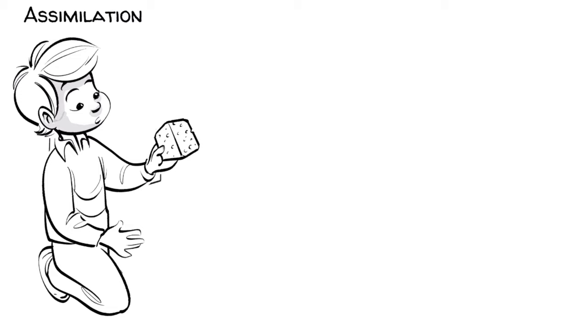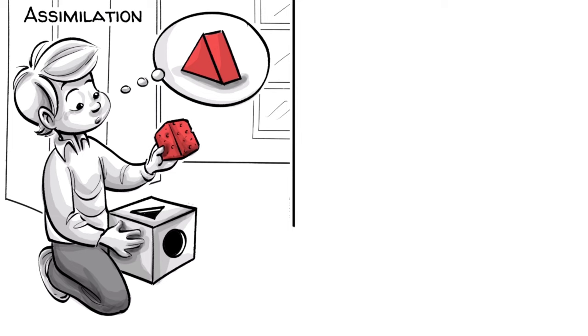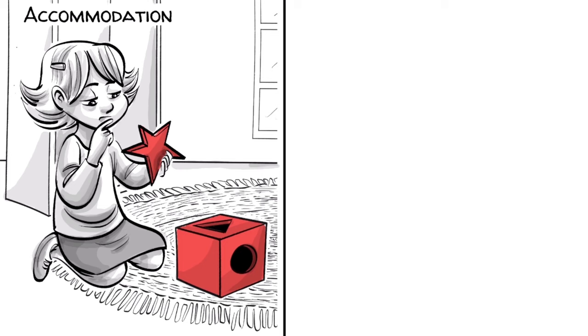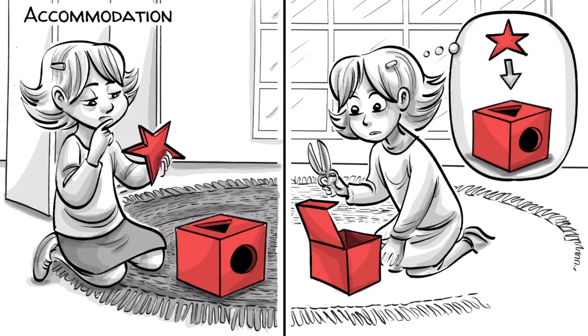Assimilation is the cognitive process of making new information fit in with your existing understanding of the world. It works if new information is close to what we already know. To process the new information, we make it fit into our existing schemas. We have to use accommodation if things are so unique that they don't fit into our existing schema. In other words, to understand something truly new, we first have to remodel our brain space.